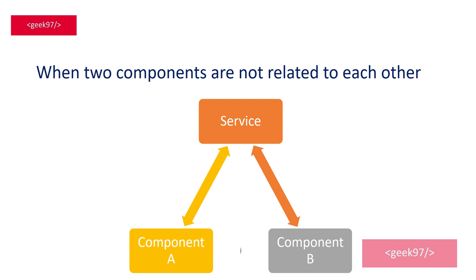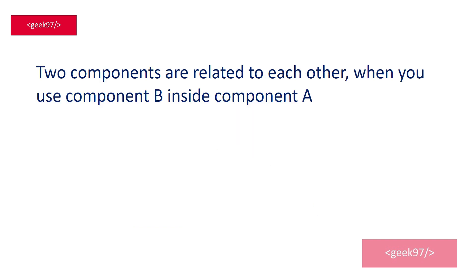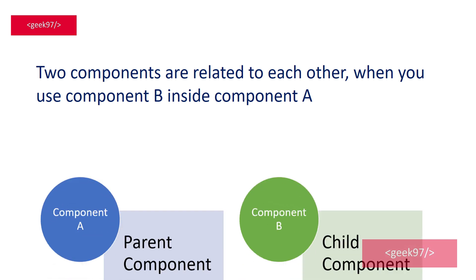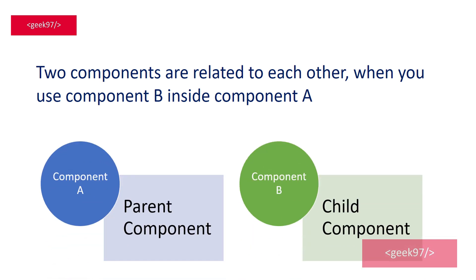In this video we are going to focus on component communication when two components are related to each other. If you use a component inside another component — for example, if you are using component B inside component A — then symbolically component A becomes the parent component and component B becomes the child component.